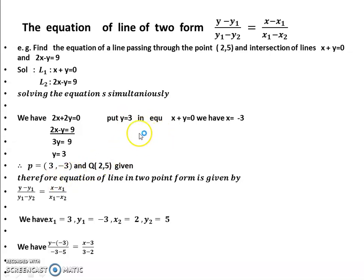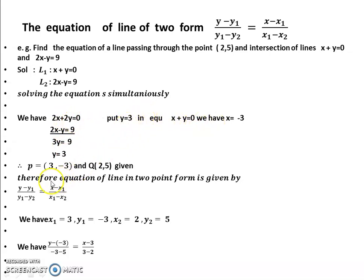Taking x plus y equals 0 and 2x minus y equals 9, adding them: y minus y cancels, 3x equals 9, so x equals 3. Putting x equals 3 into the first equation gives y equals minus 3. So point P equals (3, minus 3) and the given point Q equals (2, 5).